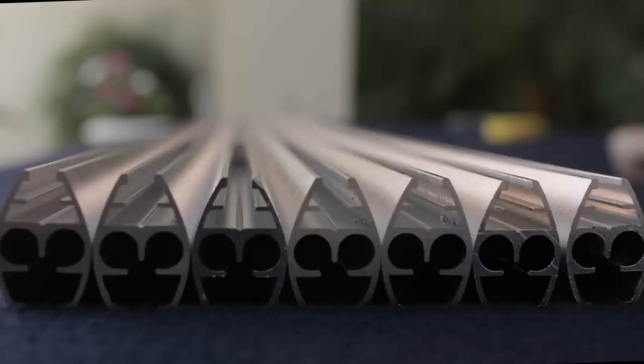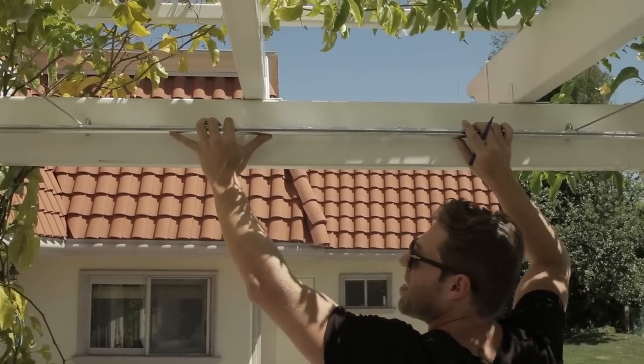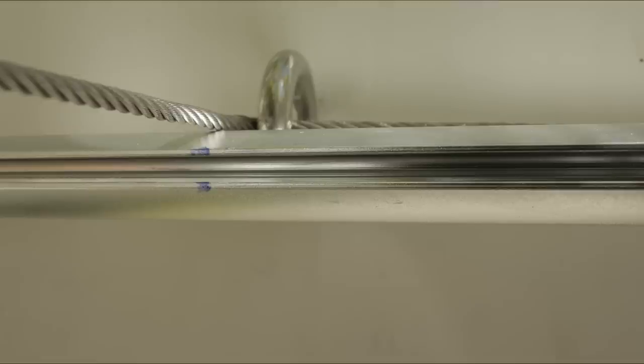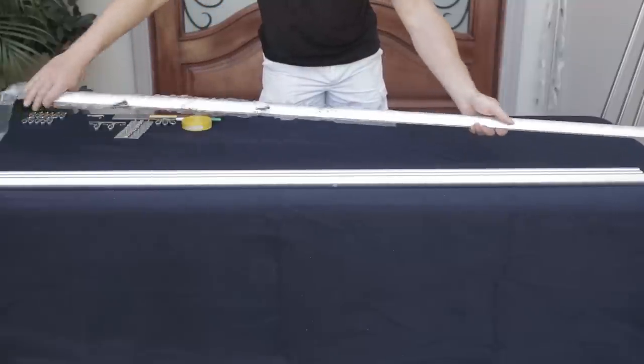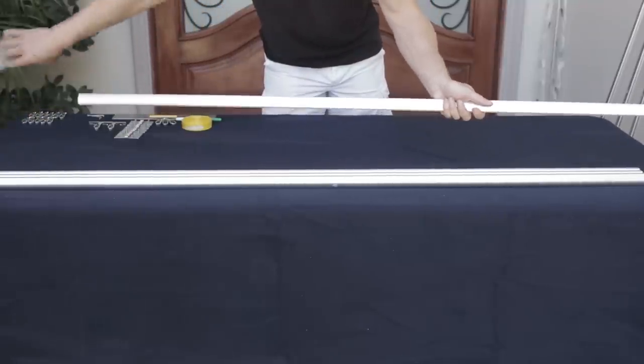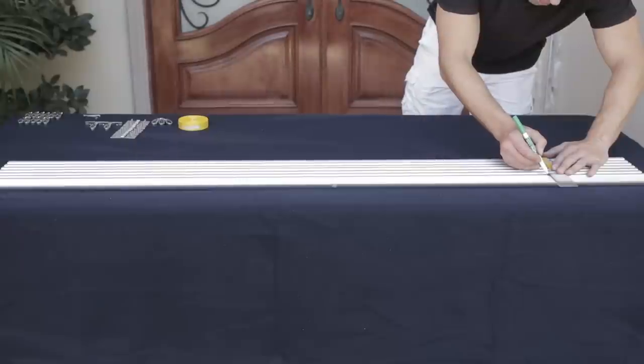To confirm our measurements, hold the profile marked earlier against the structure. Center it and mark the contact points with the cable again. Place 7 profiles back to back with the triangular channel facing up and align the ends with a ruler. Then, using a ruler, mark the location of the cable on the remaining profiles.